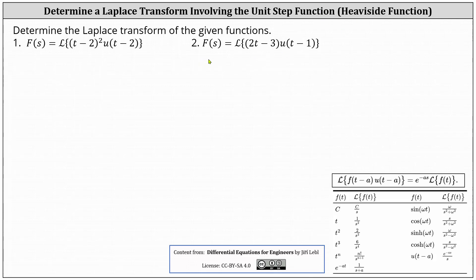To find the Laplace transforms, we'll be using the shifting property, where the Laplace transform of f of the quantity t minus a, times u of the quantity t minus a, equals e to the power of negative a·s times the Laplace transform of f of t.